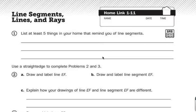Number one says list at least five things in your home that remind you of line segments. Remember, line segments are pieces of lines. They're a segment of a line. They have an endpoint on each end, so a beginning and an end.